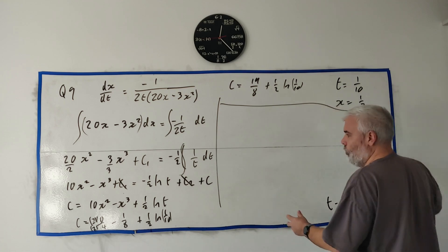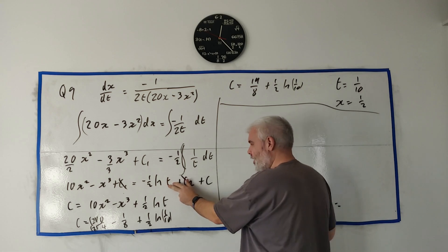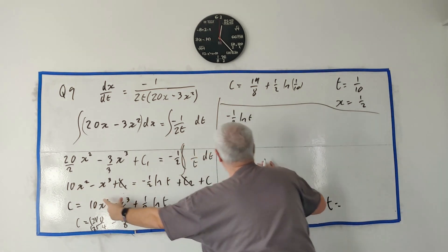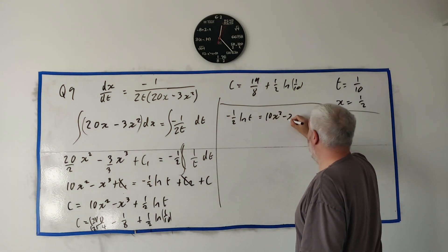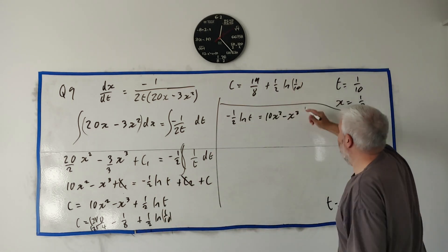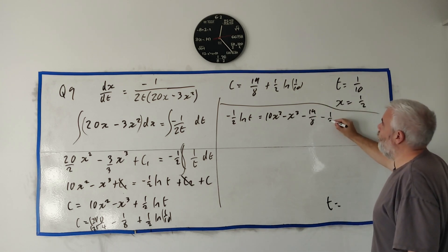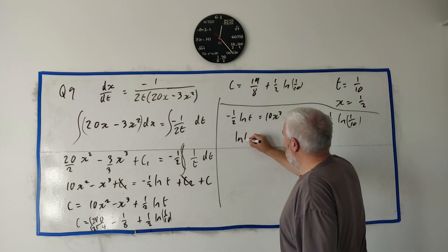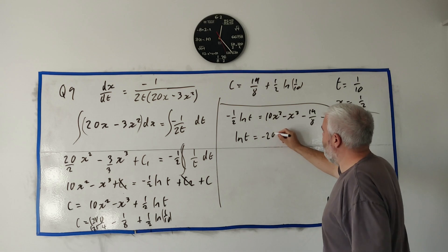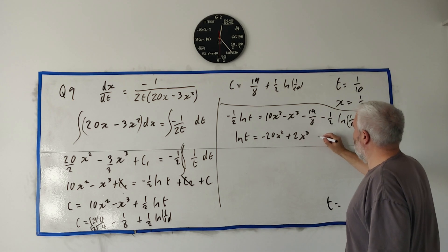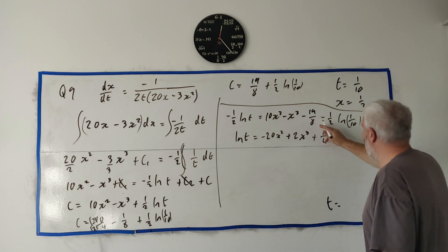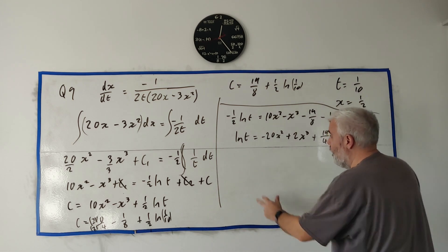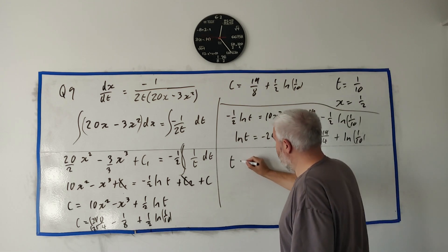Going back to solve for t: −(1/2) ln t = 10x² − x³ − C, substituting C = 19/8 + (1/2) ln(1/10). Multiplying through by −2: ln t = −20x² + 2x³ + 19/4 + ln(1/10). Then raising e to both sides cancels the ln on the left: t = e^(−20x² + 2x³ + 19/4 + ln(1/10)).